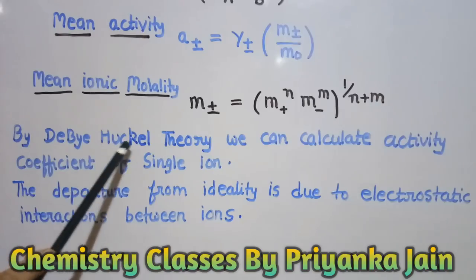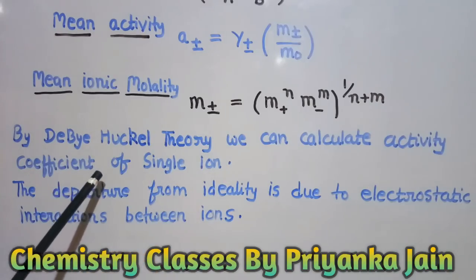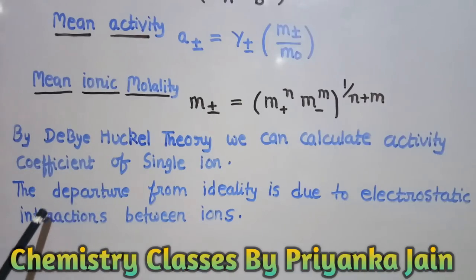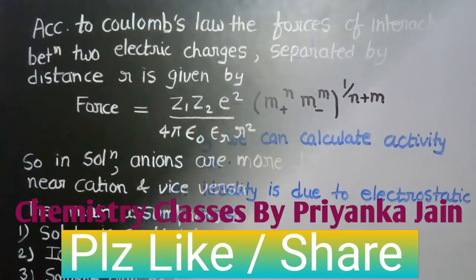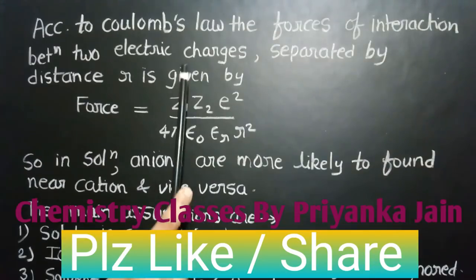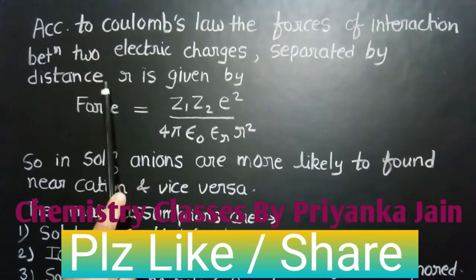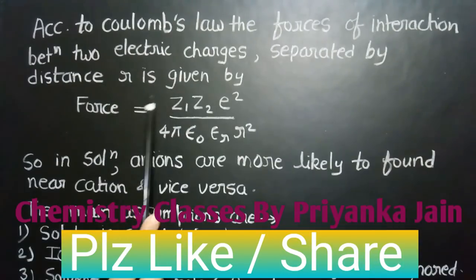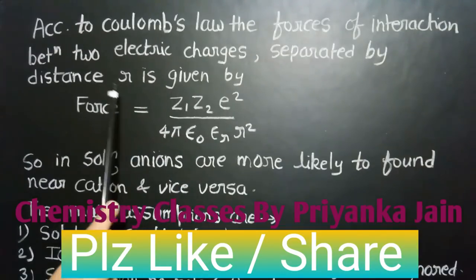By the Debye-Hückel theory, we can calculate the activity coefficient of a single ion. We know that the departure from ideality is due to electrostatic interactions between the ions. According to Coulomb's law, the forces of interaction between two electric charges separated by a distance r is given by a specific formula.